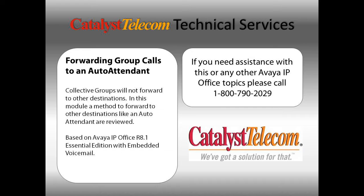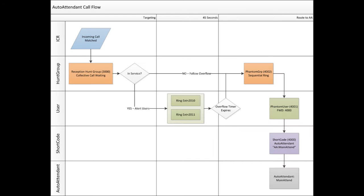This call flow deals with how to forward a call from a collective hunt group over to an auto attendant. Collective hunt groups do not forward calls very well, but we need to get that to an auto attendant, so we'll look at some tricks on how to get that there.